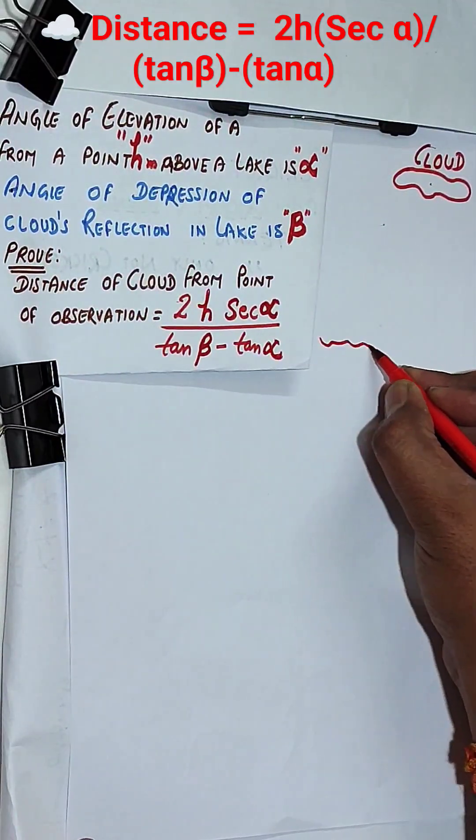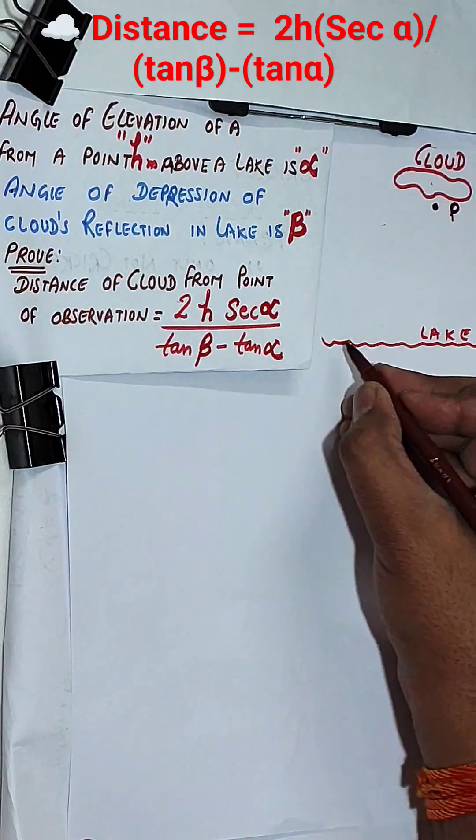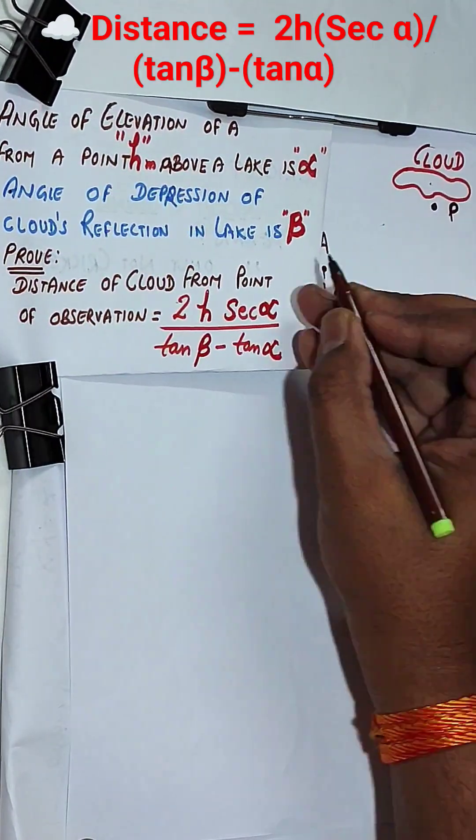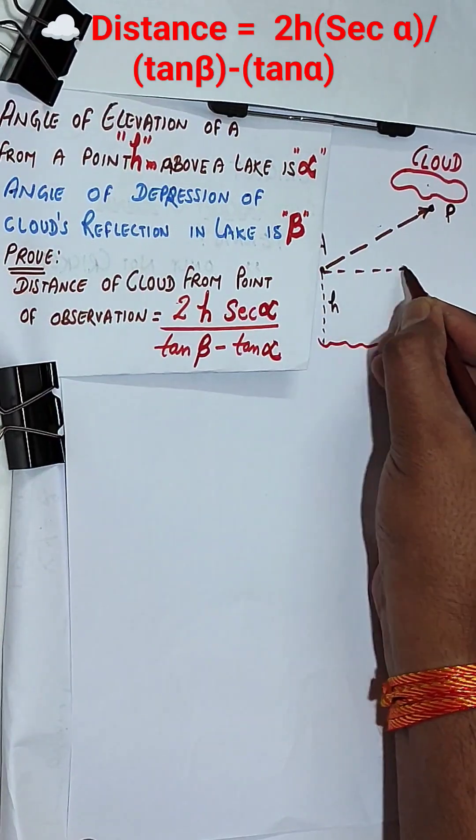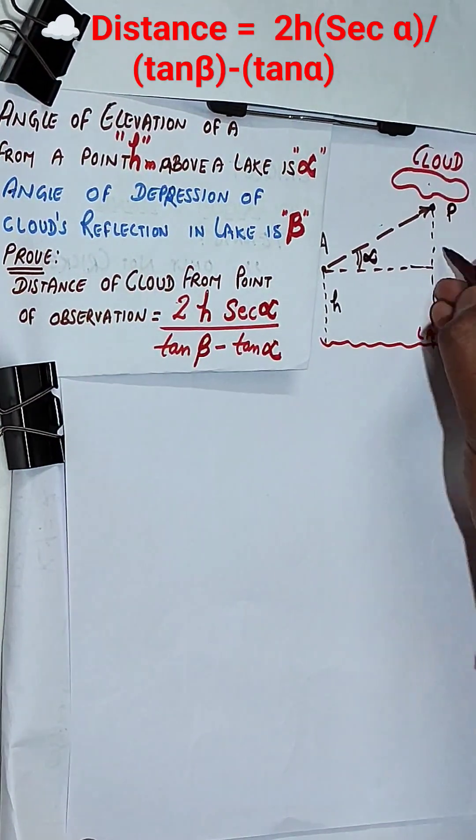This is a question where a lake is given from a height h above the lake. The angle of elevation to the cloud is alpha. Let's say the cloud is at P, so from height h, that is point A, the angle of elevation to P is alpha as shown here.